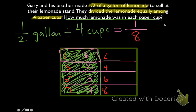So now we see that if we have a half gallon, we divide it among 4 cups, each cup is going to have just 1 eighth of a gallon of lemonade.